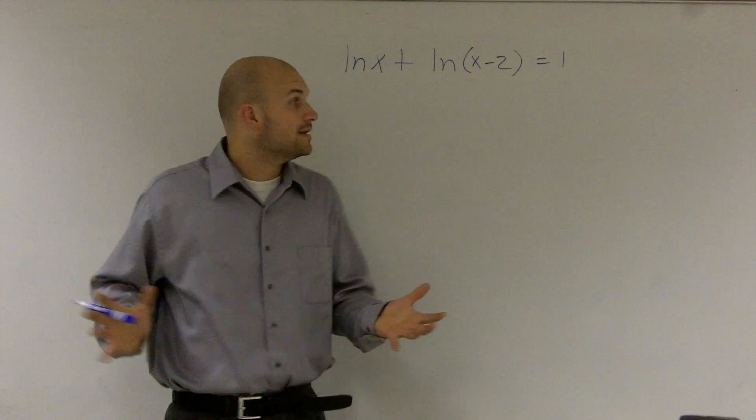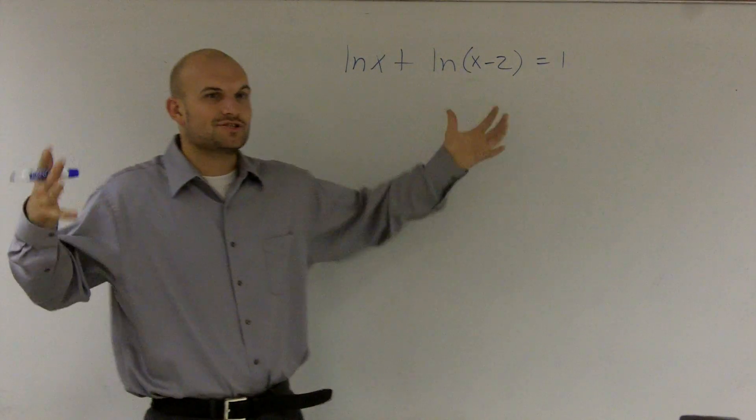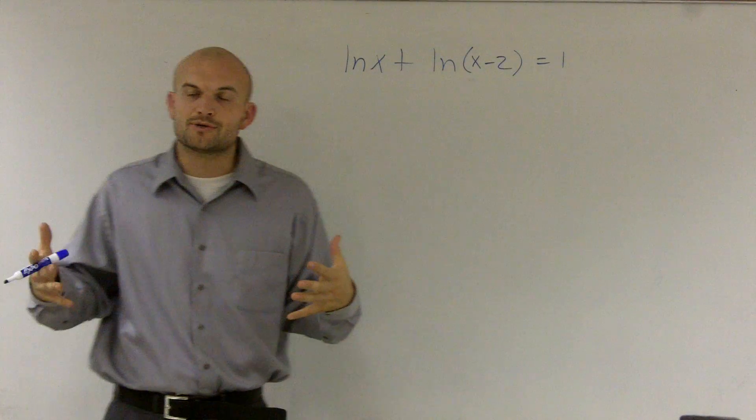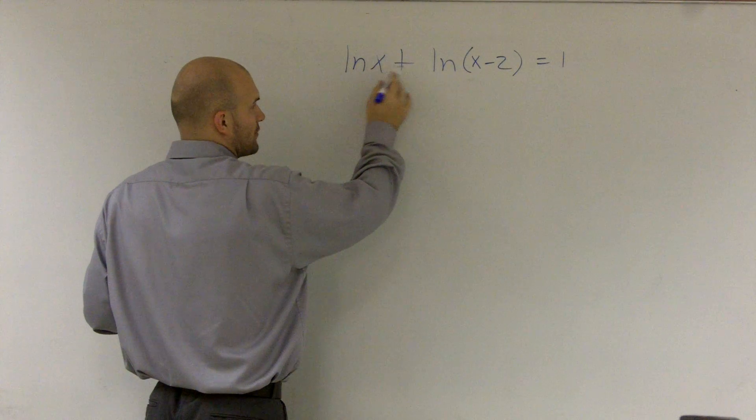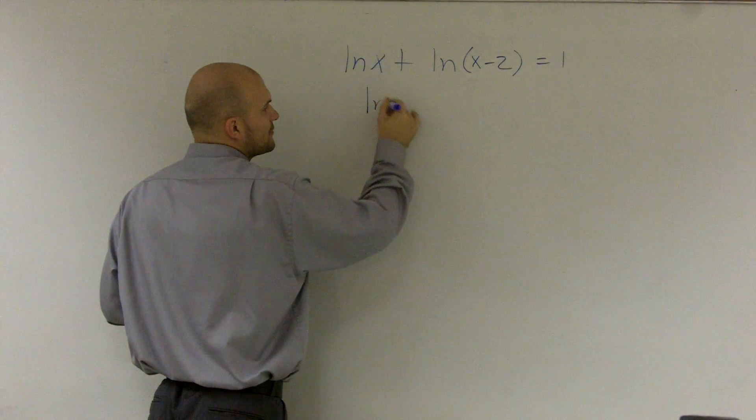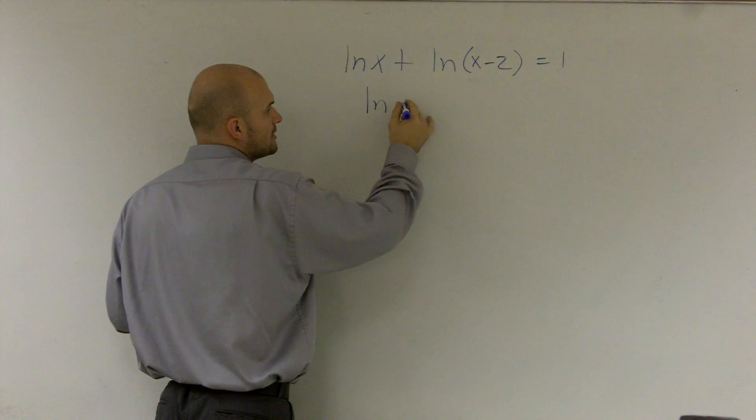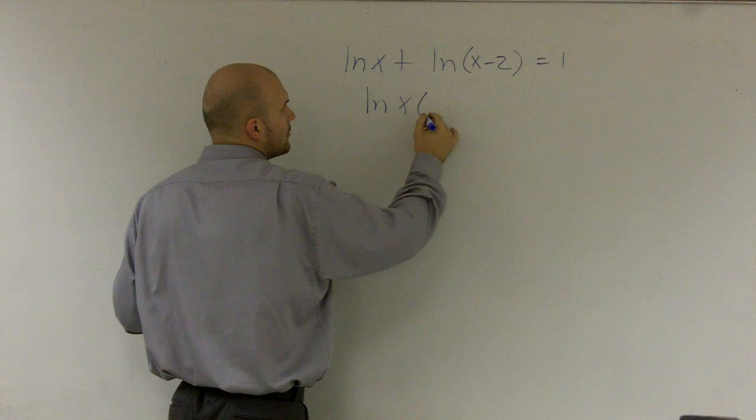So the first thing we want to do is bring these two logarithms together. The way we learned previously is use the property of logs to condense them. So what I'm going to do is, since I have a logarithm plus another logarithm, I can rewrite that as one logarithm multiplying what we're evaluating.